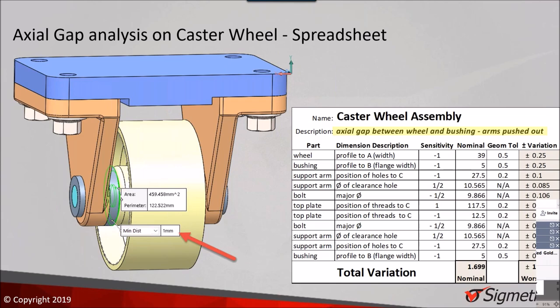The model we'll be using today is this caster wheel, taken from one of the TAL analyst tutorials. I've added some GD&T so we can pull that data in for the analysis rather than entering it manually. What we'll be studying initially is the gap — you see the two surfaces highlighted — and using the measure tool, there is one millimeter between the left face of the wheel and the right face of the bushing pressed into the support arm.